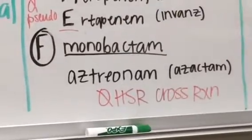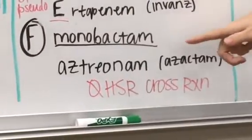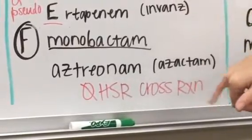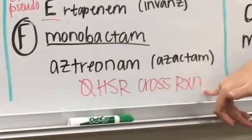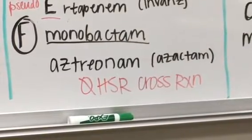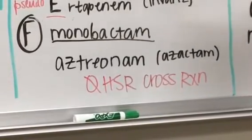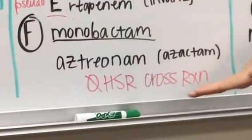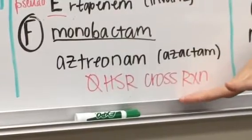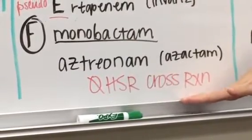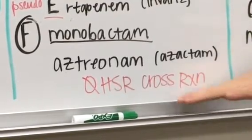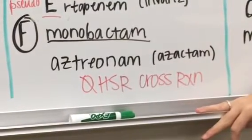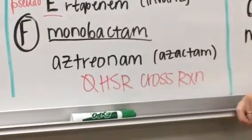Our last beta-lactam is the monobactam, aztreonam. All of these medications can cause hypersensitivity reactions, but aztreonam doesn't have any cross-reactivity with the other beta-lactams, so it can be used for patients where you're really concerned about cross-reactivity.